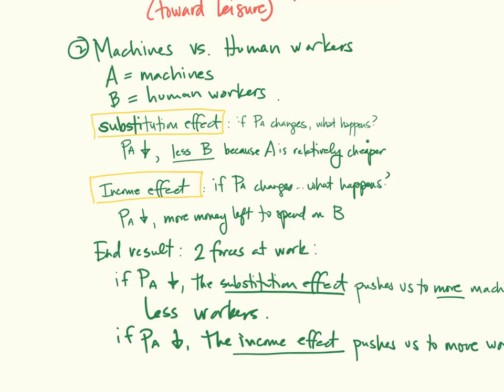And then the last application here would be the application of machines and human workers. So A is machines or robots, and B is human workers. If the price of machines changes, what happens?